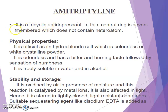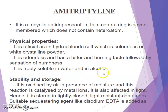Next drug is amitriptyline. It is a tricyclic antidepressant in which the central ring is a 7-membered ring that does not contain a heteroatom. Physical property: it is official as its hydrochloride salt, which is a colorless or white crystalline powder. It is odorless with a bitter and burning taste followed by sensation of numbness, and it is freely soluble in water and alcohol. Stability: it is oxidized by air in the presence of moisture, a reaction catalyzed by metal ions, and it is affected by light; hence stored in a tightly closed, light-resistant container.